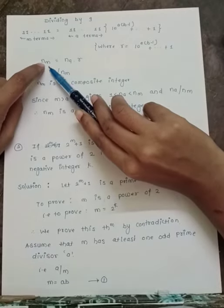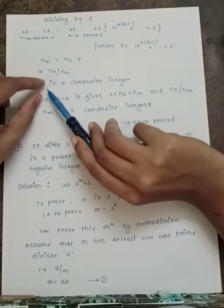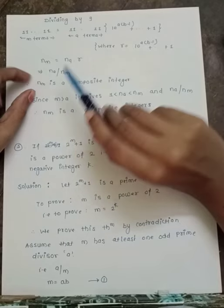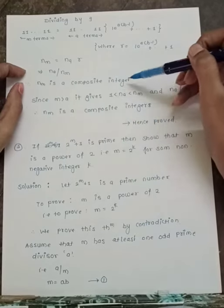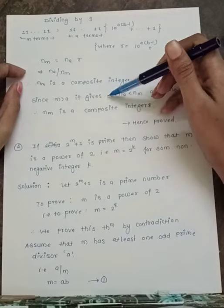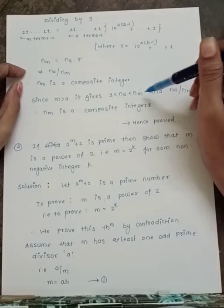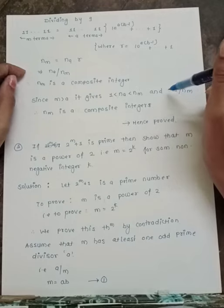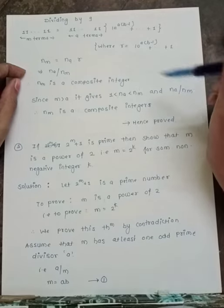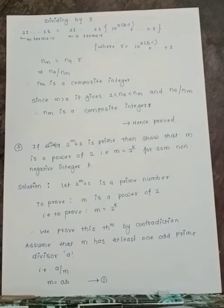So nm = na · r, therefore na divides nm. Therefore nm is a composite integer, since m > a gives 1 < na < nm. Hence nm is composite.